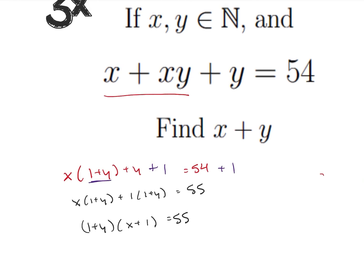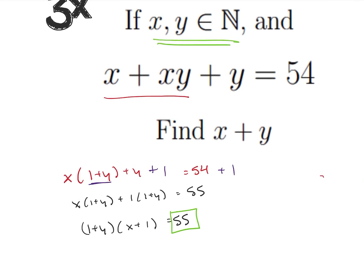So the next portion of the problem here is noticing that I have 55, and I'm dealing with only integers. So what I'm going to notice here is that the prime factorization of 55 is going to be 5 times 11. So those are the only two natural numbers that I can multiply to get 55.